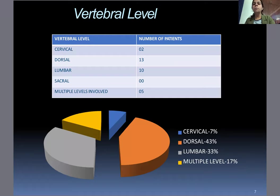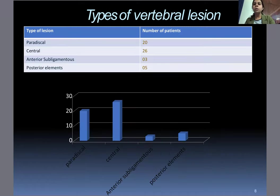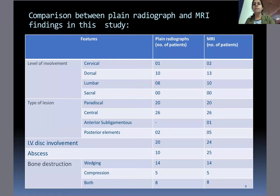Vertebral level: Out of all patients, it was observed that dorsal and lumbar vertebrae were the most affected, and sacral were the least. Types of vertebral lesion: the maximum number of lesions involved the central portion of the vertebral body. Comparison between plain radiograph and MRI findings concluded that the dorsolumbar vertebral level was most involved, with central type lesions predominating, and IV disc involvement with abscess formation was seen in 20 patients. Bone destruction was also common, of which wedging was the most important finding.